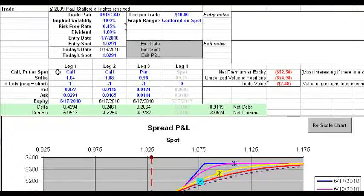The main part of the spreadsheet where you enter the trades is here. You can see that you can enter up to four different legs. You can select whether they're a put, a call, or a spot. You enter the strike, the number of lots that you want to trade, and negative represents a short position, and the bid, ask, and expiry.